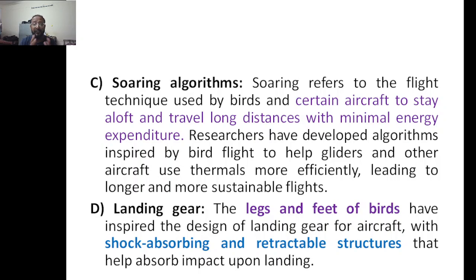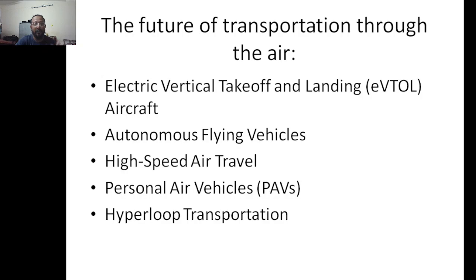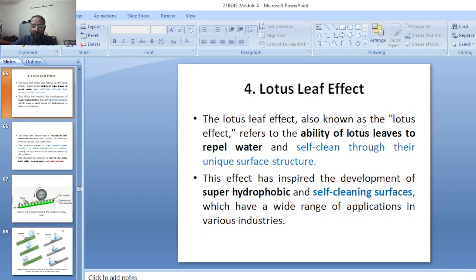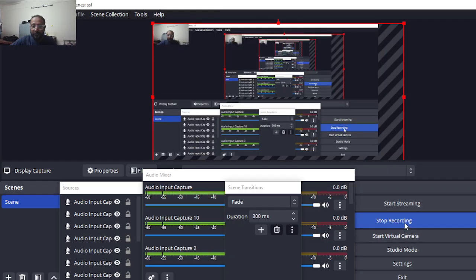Landing gear was inspired by the legs and feet of birds — it features shock-absorbing and retractable structures for cushioning during landing. Future developments include electric vertical takeoff and landing (eVTOL) — an area where SpaceX and Elon Musk's company are doing a lot of research — as well as autonomous flying vehicles, high-speed air travel, personal air vehicles, and hyperloop transportation. That's it for today, and tomorrow we can continue.